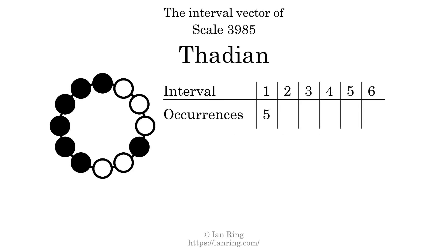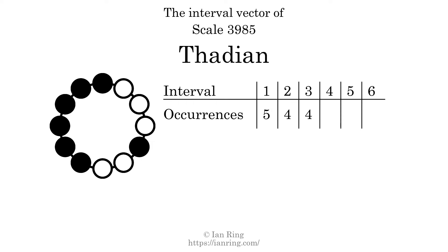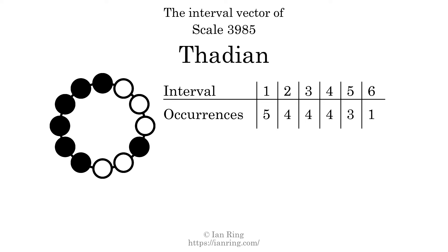The interval vector of a scale is a description of what intervals exist between its tones. There are 5 intervals with the size of 1 semitone, 4 intervals with the size of 2 semitones, 4 intervals with the size of 4 semitones, 3 intervals with the size of 5 semitones, and 1 interval with the size of 6 semitones. Each interval does not appear in this scale a unique number of times, so this is not a deep scale.